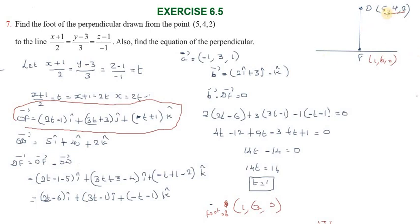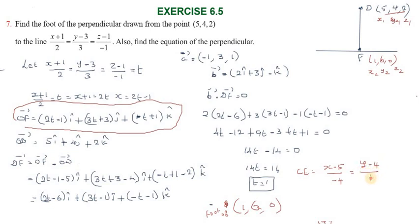Now finding the Cartesian equation of the perpendicular. The line passes through points (5, 4, 2) and (1, 6, 0). Using the two-point Cartesian form: (x−x₁)/(x₂−x₁) = (y−y₁)/(y₂−y₁) = (z−z₁)/(z₂−z₁), giving (x−5)/(1−5) = (y−4)/(6−4) = (z−2)/(0−2).